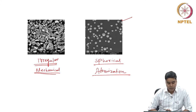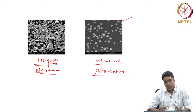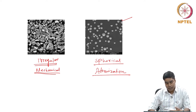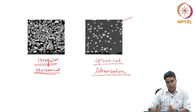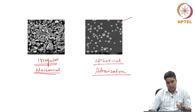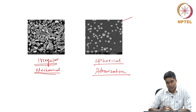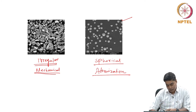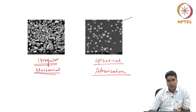In a powder metallurgy process, you start with the powder and then follow certain processing steps. In each of those steps, a particular process is involved which uses some kind of tooling to first compact the powder to give it a particular shape, and then finally consolidate and densify it to get the end product. This compaction and consolidation part is going to be affected by powder characteristics such as powder shape and size.